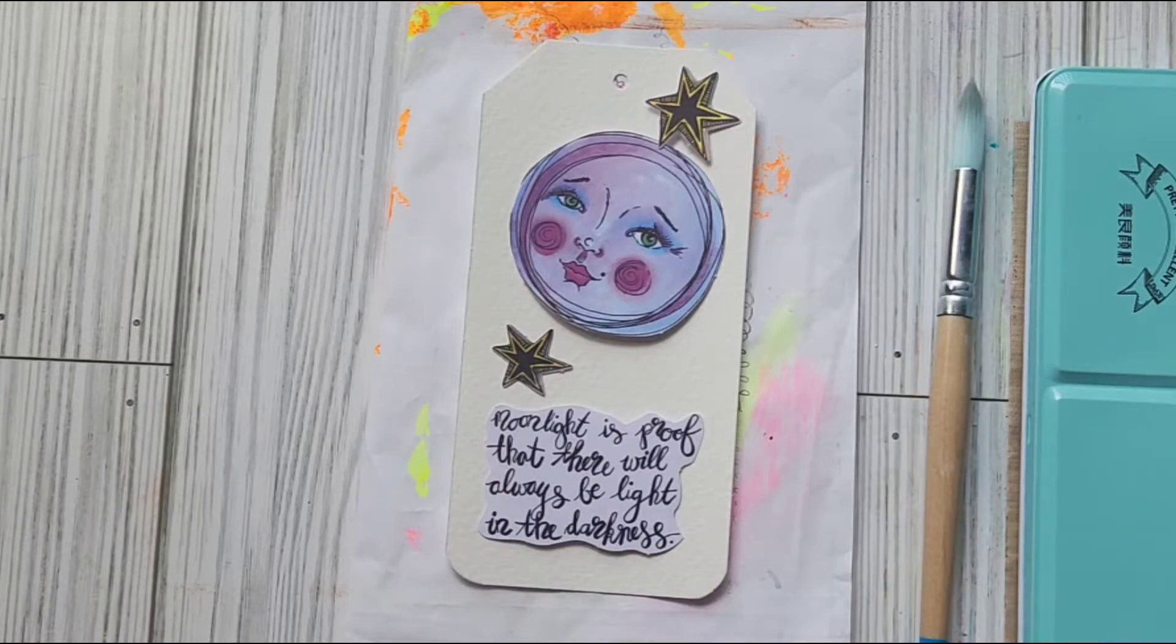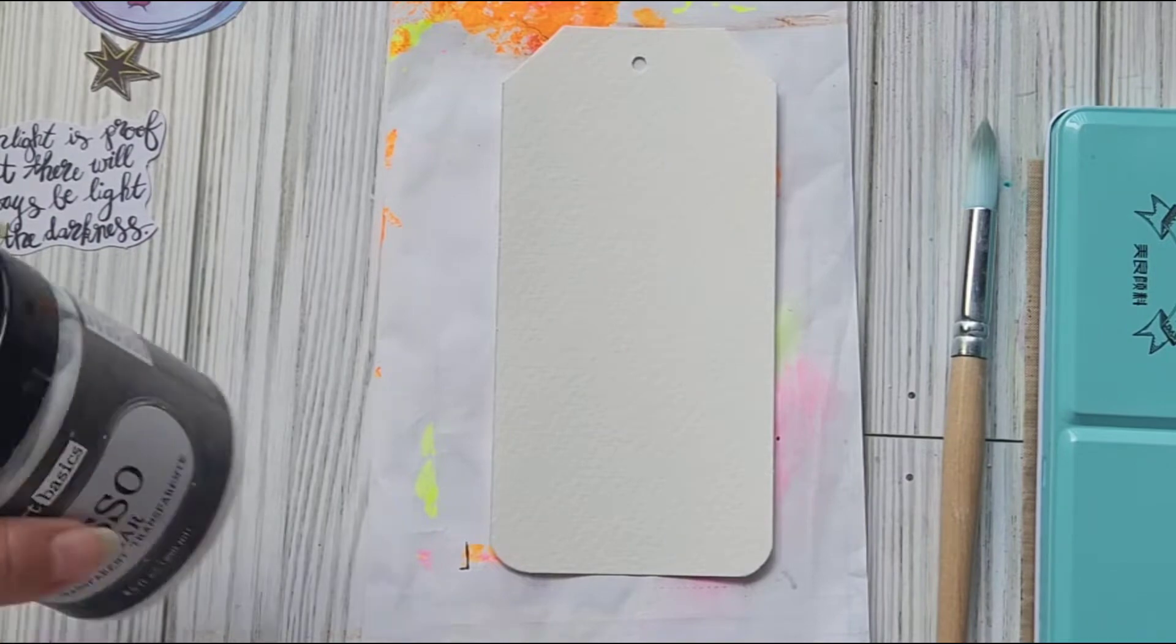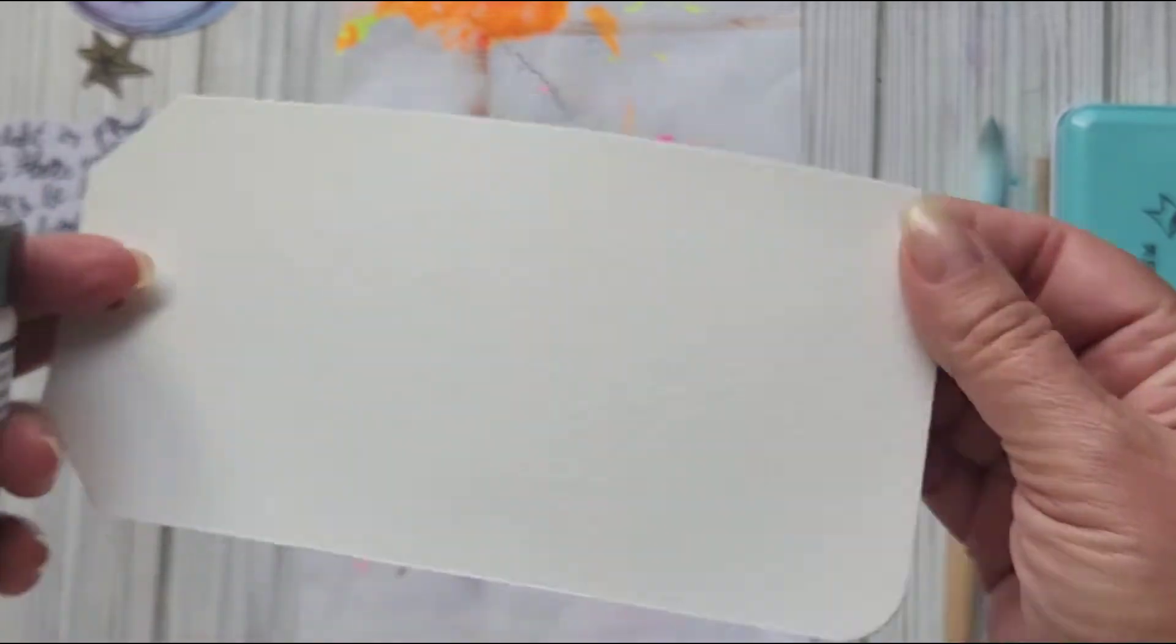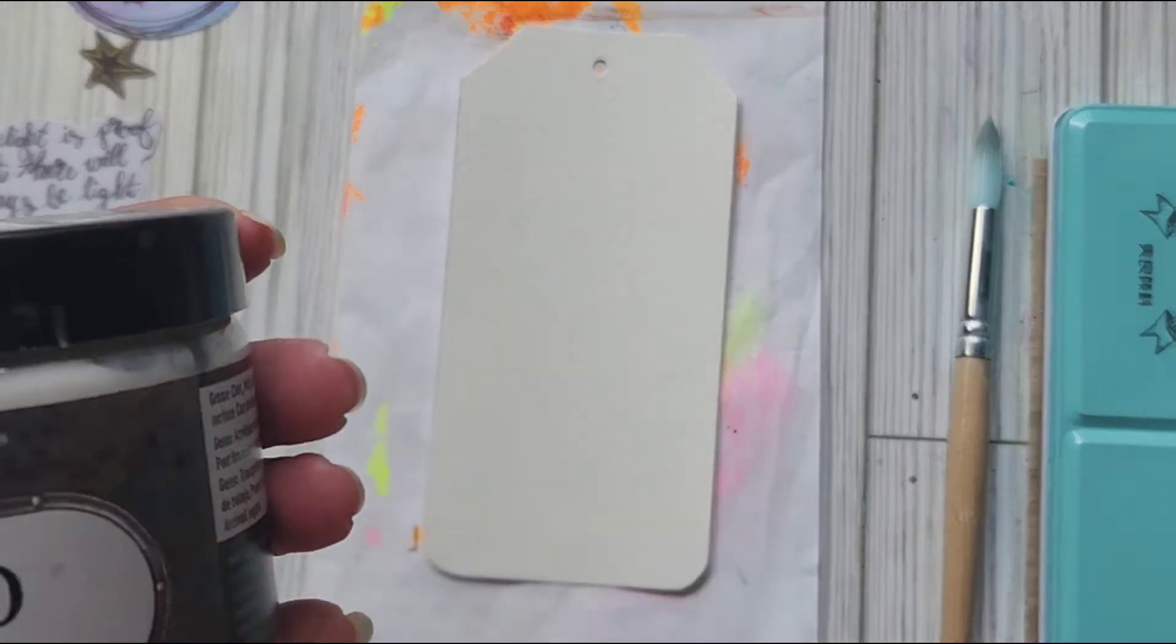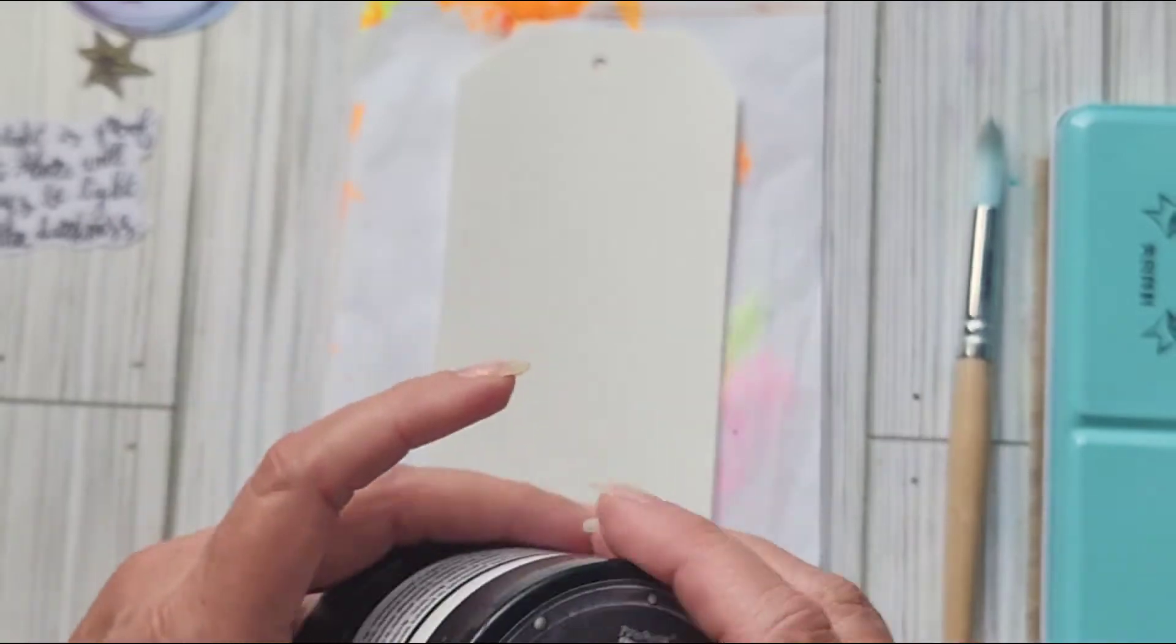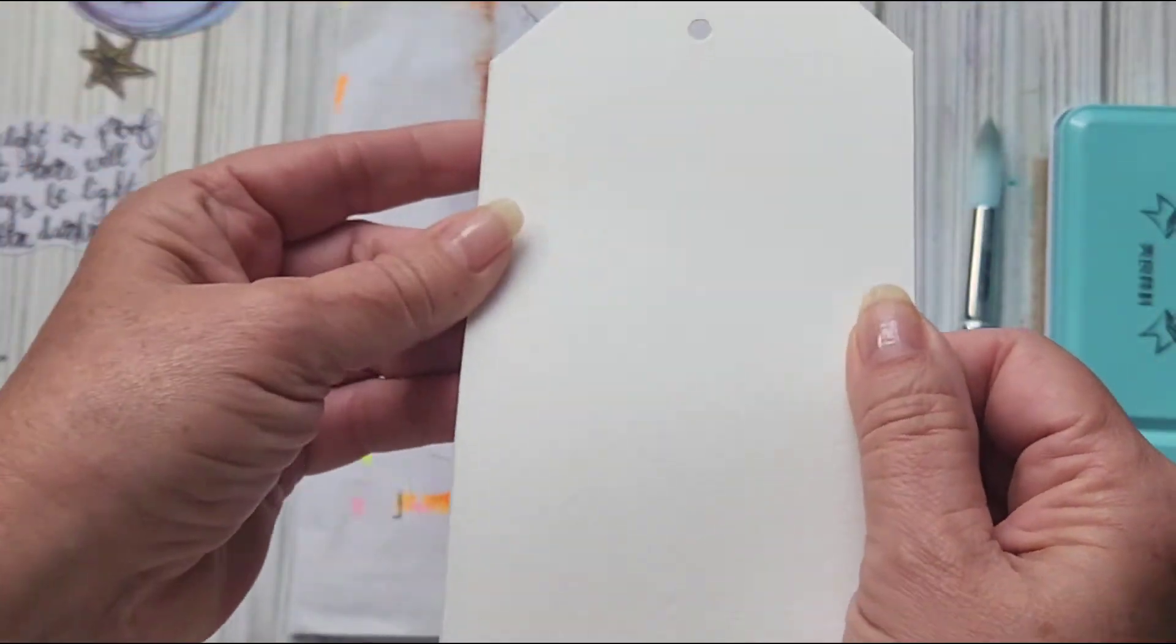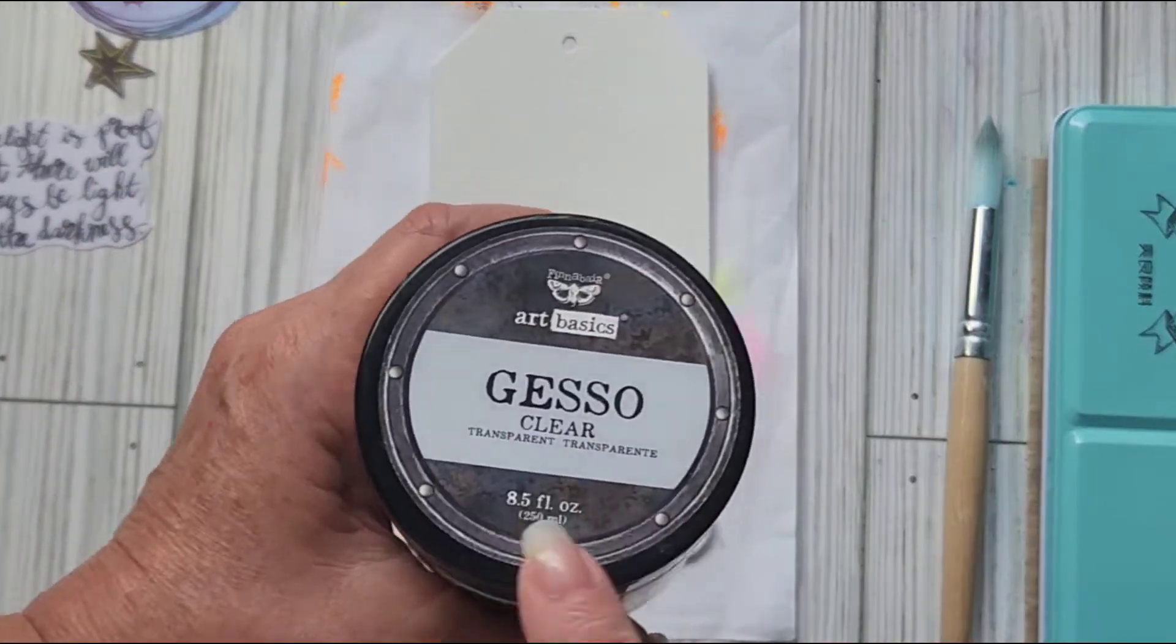Okay, the tag that I made is watercolor paper from the pad that I bought from Walmart. I'm using Art Basics clear gesso, it's very fine, I love it. It's on there but it's not super rough, I use it in a lot of my Bible journaling.